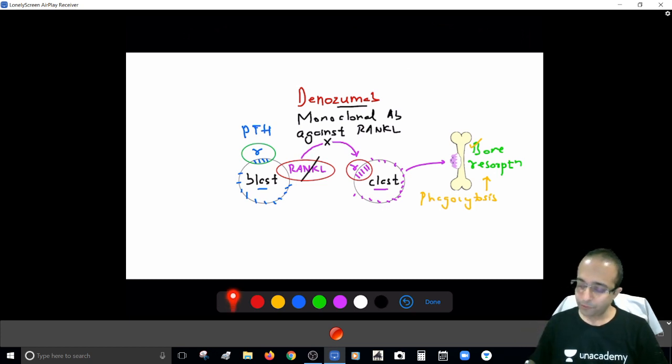So if Denosumab will eliminate RANKL, this step cannot pursue. That means osteoblast cannot activate osteoclast. So bone resorption is going to stop. So I hope that tells you the whole story, how Denosumab is going to work. It's something that's going to simply stop bone resorption.